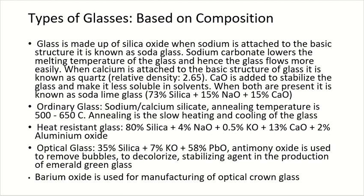Ordinary glass is made up of sodium or calcium silicate with an annealing temperature of 500 to 650 degrees Celsius. Annealing is the process of slow heating and cooling of the glass to make it hard. Heat-resistant glass is made up of 80% silica, 4% sodium oxide, 0.5% potassium oxide, 13% calcium oxide, and 2% aluminium oxide. The basic composition of optical glass is 35% silica, 7% potassium oxide, and 58% lead oxide. Antimony oxide is also used sometimes to remove bubbles, decolorize the glass, or as a stabilizing agent.